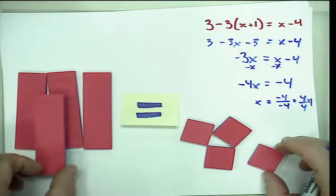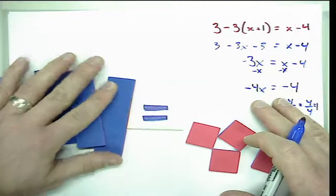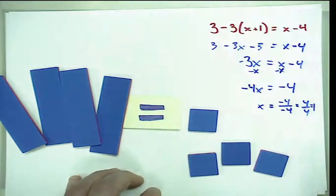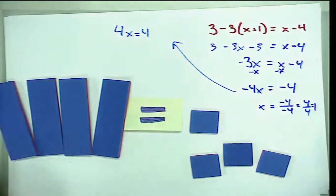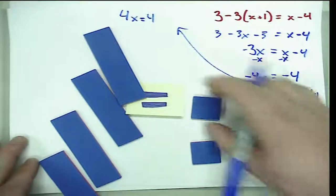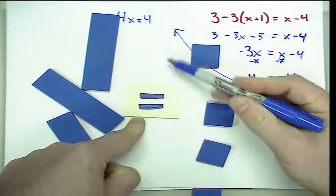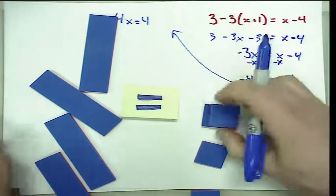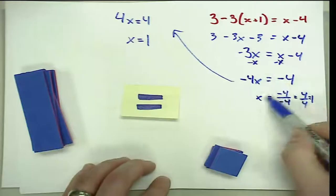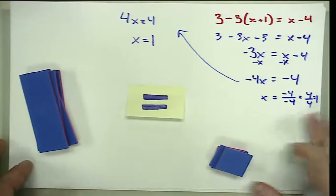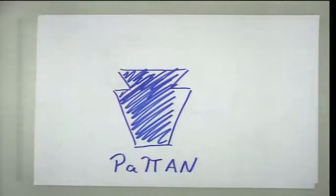Another way to handle this is to multiply everything by negative one. That gives us positive four X equal to positive four. Then we can sort the ones evenly and find that each X gets paired with one — without crossing the equal sign since we're not using an inverse operation. So X equals one. There are different ways to handle the division at the end; use what's most appropriate for your students and classroom.